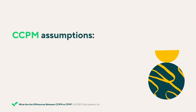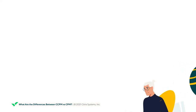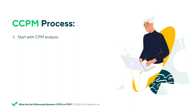CCPM is based on several assumptions. The first is that task owners will often overestimate how long an activity will take, leading to wasted time. Secondly, that task owners will procrastinate and delay start time, or finish early and increase the scope. CCPM starts with a CPM analysis of the project scope, then tasks are scheduled based on their durations and dependencies. Next, crash the schedule by removing 50% of the estimated duration of each activity, and put this time into a buffer at the end of the activity sequence.